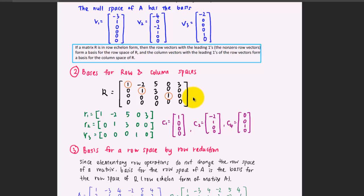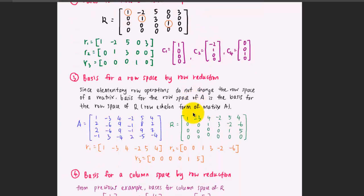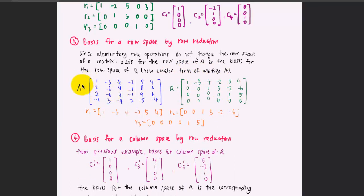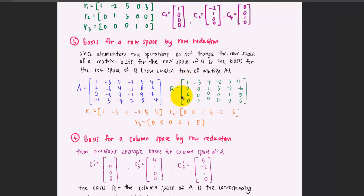However, these are not the basis for the row and column space of the original matrix A. To find the basis for the row space of A by row reduction: since elementary row operations do not change the row space, the basis for the row space of A is the same as the basis for the row space of R. After reducing matrix A to row echelon form, the non-zero rows — the first, second, and third rows — form the basis for the row space of A as well.